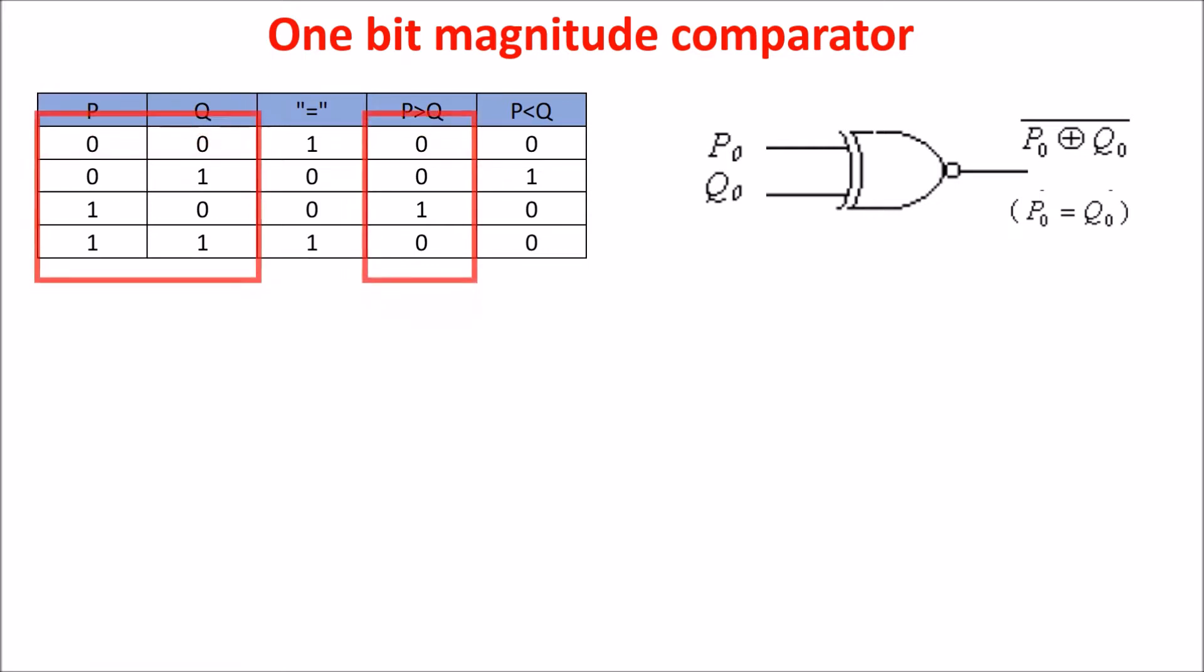For P greater than Q we need the output at one only when P is one and Q is zero, so we can build such circuit with an AND gate and an inverter.